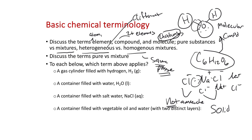The terms pure versus mixture: a pure substance contains mostly just that one substance, and a mixture contains two or more substances. Let's try to classify: a gas cylinder filled with hydrogen — H2 gas. That's the elemental form of hydrogen. Hydrogen exists as a diatomic molecule, H2, which is two hydrogens bonded together. H2 is a molecule because we have two atoms present. It's not a compound because we don't have two or more different elements. It is an element because we just have the element hydrogen.